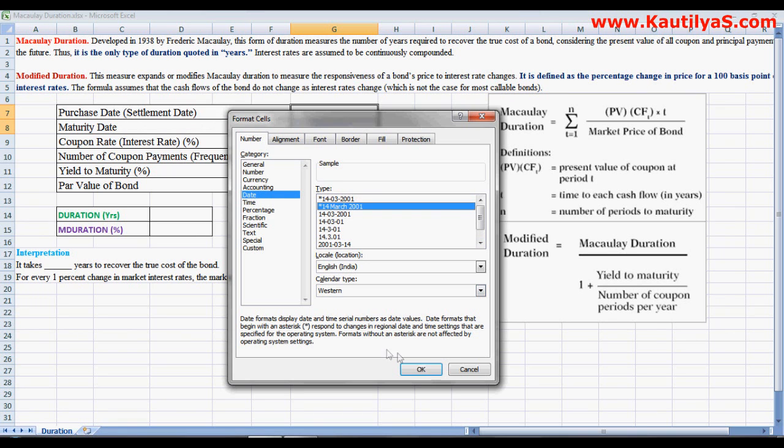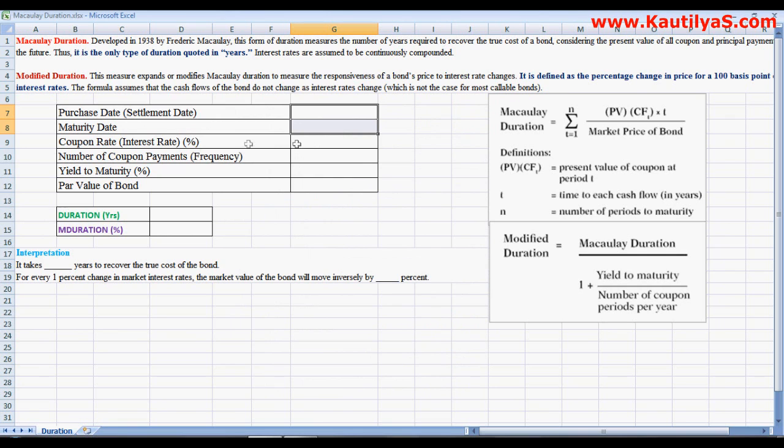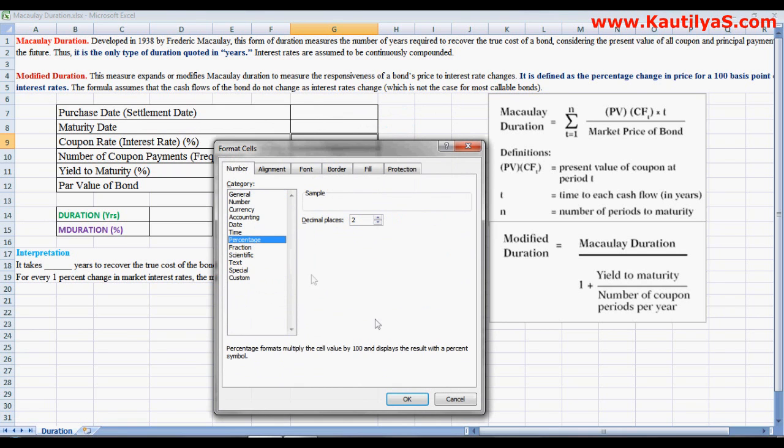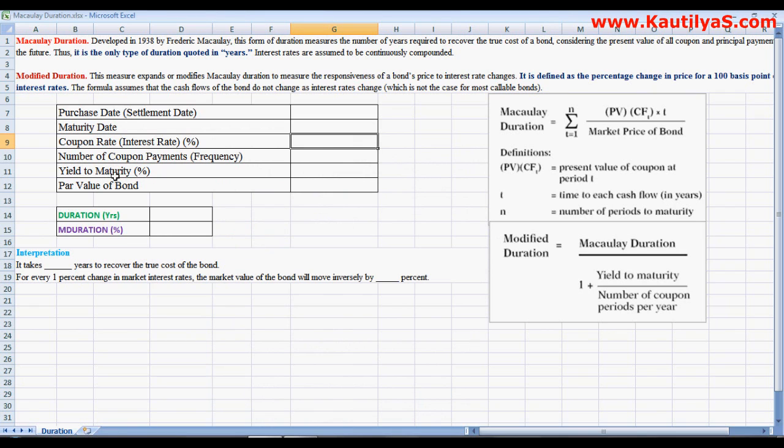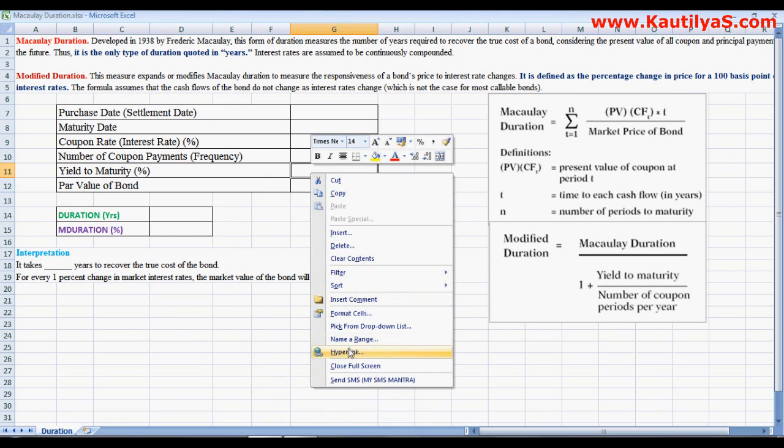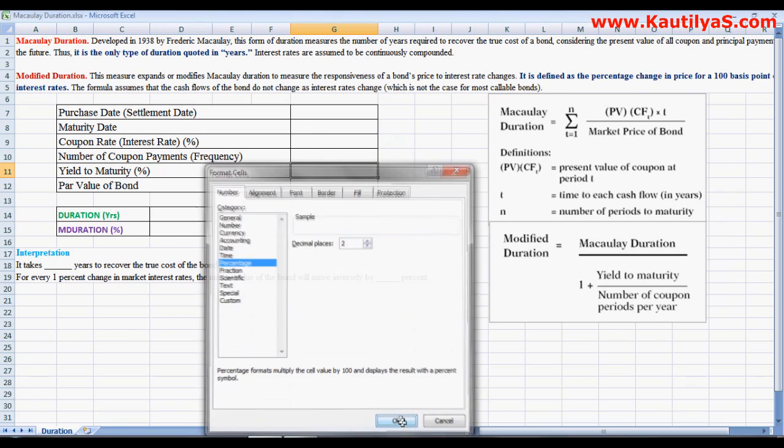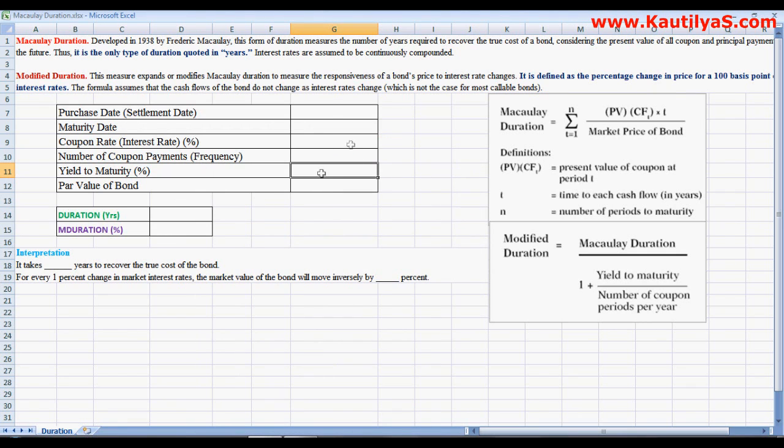These two need to be formatted as a date, whereas coupon rate needs to be formatted as a percentage with two decimal points, and yield to maturity needs to be formatted as percentage, and value of the bond.